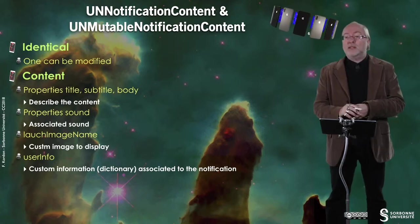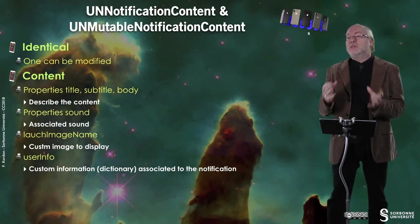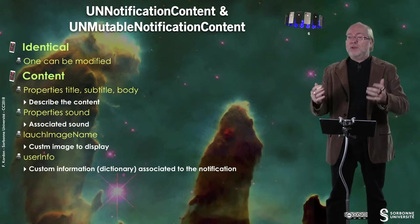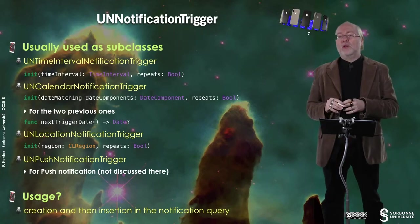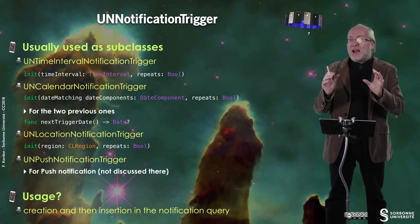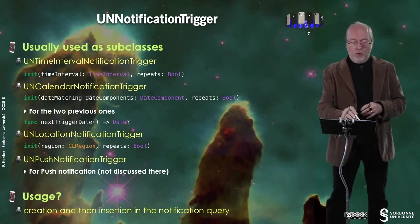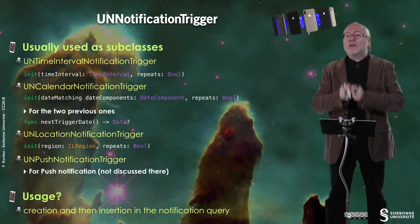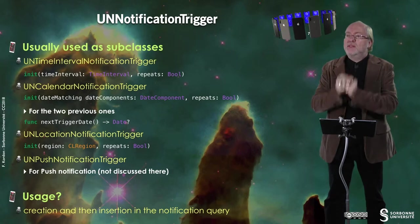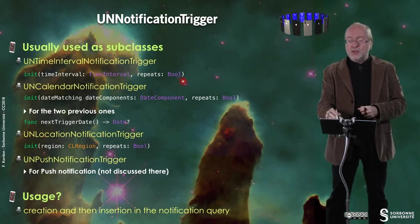The UN Notification Trigger is usually used not directly but its subclasses are used, and there are already predefined subclasses. You have UN Time Interval Notification Trigger and UN Calendar Notification Trigger — they are quite similar. One triggers in a given time interval and the other triggers when a specific date is reached. In both cases you can do some repetition.